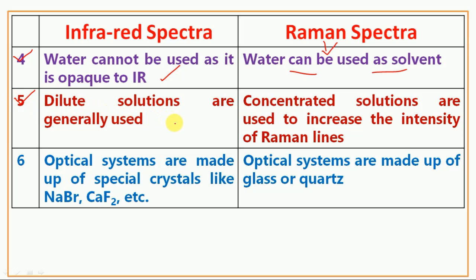The fifth point: in IR Spectra, generally dilute solutions are used. In Raman Spectra, concentrated solutions are used in order to increase the intensity of Raman lines.